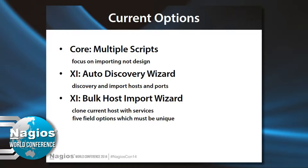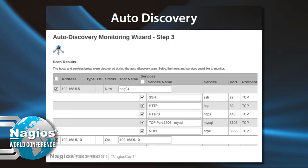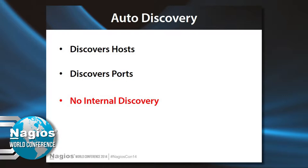In Nagios XI there's the auto-discovery wizard, which discovers hosts and ports, and there's also the bulk host import wizard, which allows you to clone hosts with their services, host groups, et cetera. Auto-discovery lets you go out on your network and discover all those hosts and all those available ports, giving you a nice list. But the problem is it discovers hosts and ports — that's beneficial — but you really don't know what's going on inside. You're only implementing about a third or maybe 25% of what you want to do.